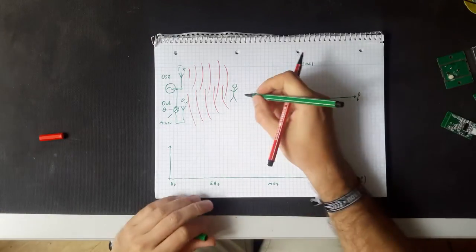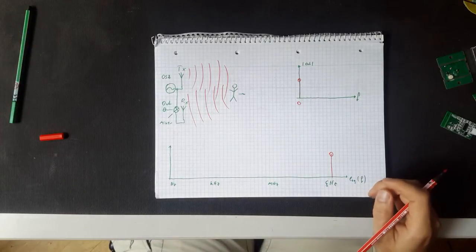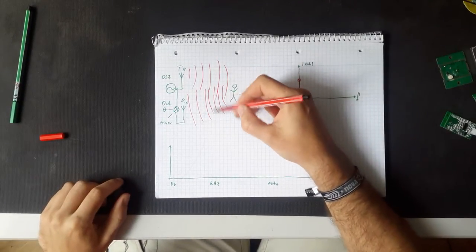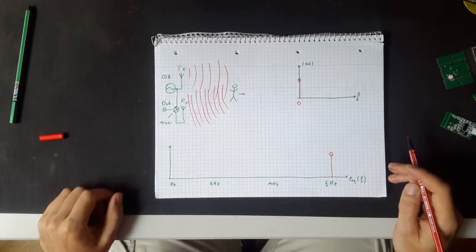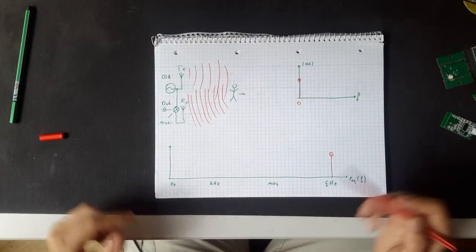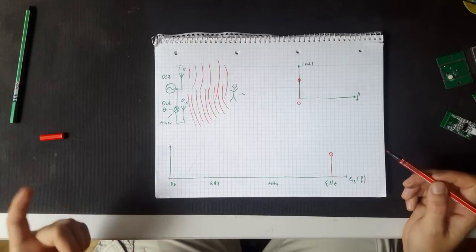So if our Mr. Stickman here now moves, then something is occurring which is called a Doppler shift. So the wave that is going back from the reflected object is actually slightly manipulated in its frequency. And when it's now down converted, these two frequencies now subtract and we end up with a value that is not zero.